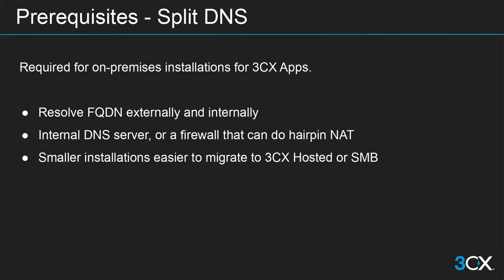Moving on to the networking aspect: split DNS. This is a requirement if you are using an on-premises installation and using the 3CX applications. If your PBX is deployed in the cloud — hosted by 3CX or a third-party provider — you do not need to do anything. This is only for on-premises installations. Split DNS means resolving the FQDN of the PBX externally to the external IP address of the firewall when outside the network, and to the private IP address of the server when internally within the network. You will require an internal DNS server for this, or a firewall that can do hairpin NAT. On smaller installations, it may be easier to migrate to 3CX hosted or an SMB offering.